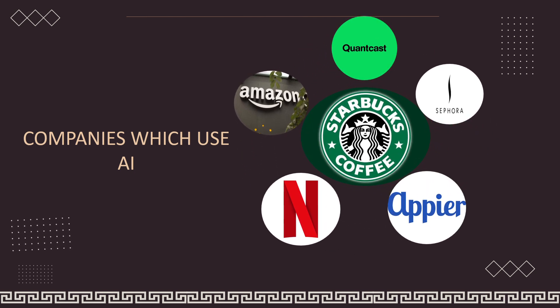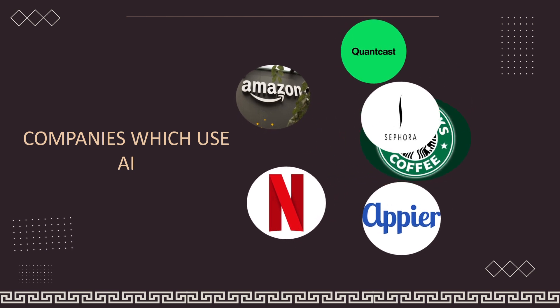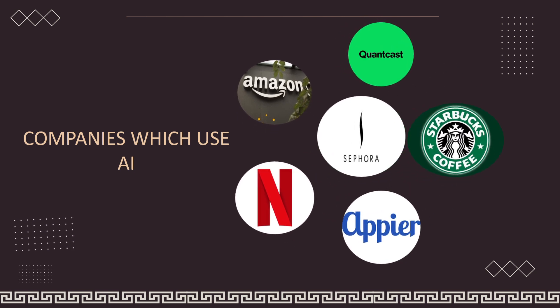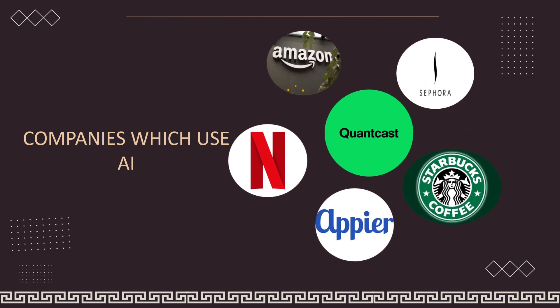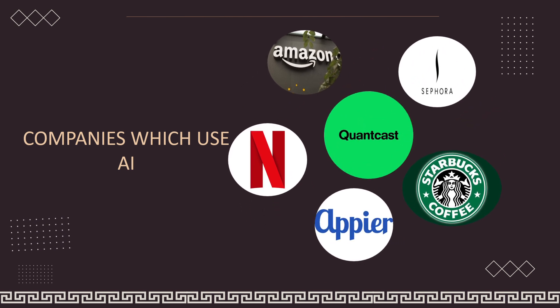Next comes Starbucks. Starbucks has announced that they will be using AI in the future, so let's wait and see what they will be using. Sephora uses chatbots on their website. Comcast uses AI for real-time advertising and marketing.